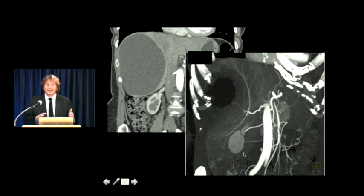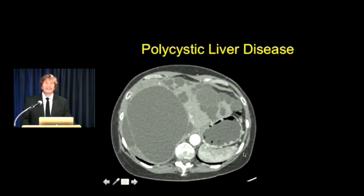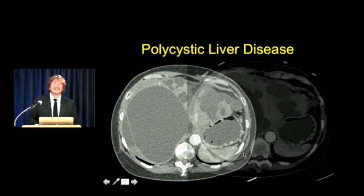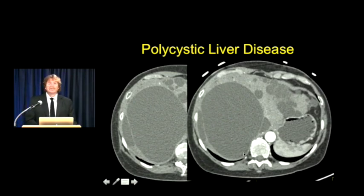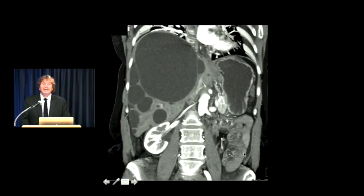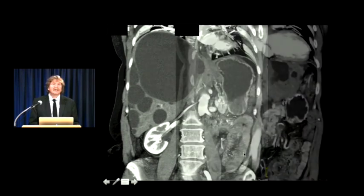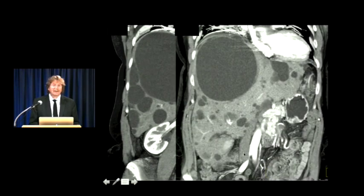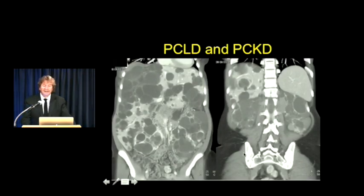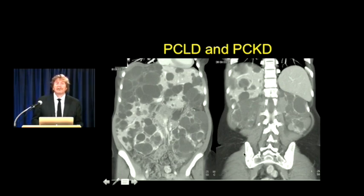When you have multiple cysts, that's polycystic liver disease. We talk about polycystic liver disease in the same breath as polycystic kidney disease - about half of patients have both. With polycystic liver disease, sometimes you have very large cysts and smaller cysts. They typically involve both lobes of the liver. Sometimes it's an incidental finding; sometimes patients present with liver failure when the entire liver is replaced by cysts. Here's an example with large kidneys from polycystic kidney disease and very extensive polycystic liver disease with some portions of the liver entirely replaced by cysts.